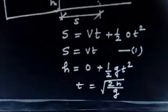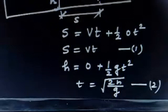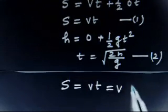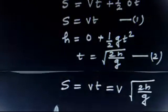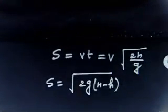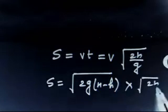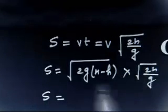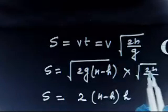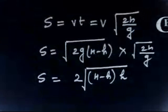Plugging the value of T into equation 1: S = V × T = √(2g(H − h)) × √(2h/g). The g cancels out, giving S = 2√(h(H − h)), with the factor of 2 coming from the two square roots.